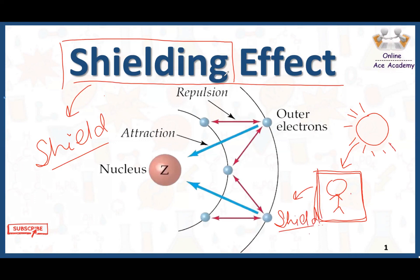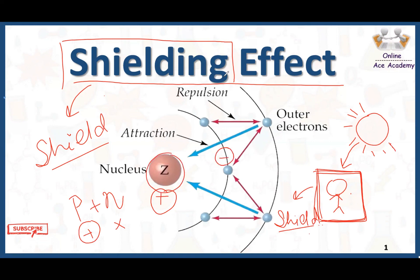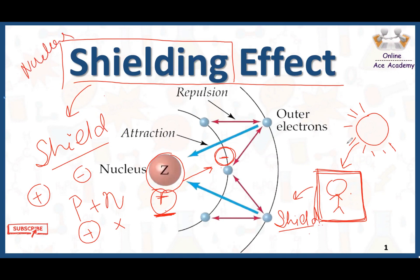The walls of the room are creating a shielding effect. In the case of an atom, the same happens. The nucleus has a positive charge because it contains protons and neutrons — protons have a positive charge and neutrons have no charge — so overall the nucleus has a positive charge, and the electrons have a negative charge. This positive charge attracts the negative charge, and this attraction is called nuclear attraction.